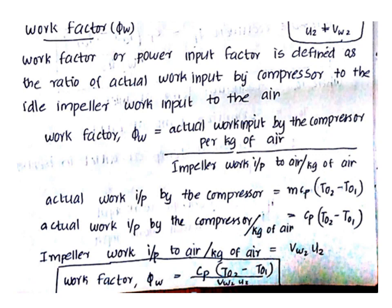We represent the expression for the work factor ψw. The actual work input equation is m·CP·(T02 minus T01), where T02 and T01 are stagnation properties. Per unit mass, the actual work input is CP·(T02 minus T01). The impeller work input per unit mass is VW2·U2. Therefore, the work factor ψw equals CP·(T02 minus T01) divided by VW2·U2.